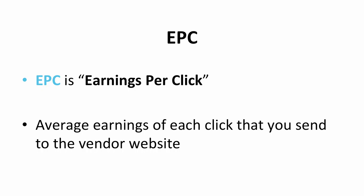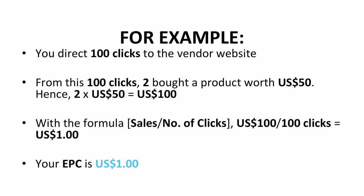In the previous slide, I mentioned EPC. Now I will elaborate and explain about it, and introduce the formula to calculate it. EPC stands for earnings per click — it's the average earnings of each click that you send to the vendor website. It involves your conversion rate. The formula for EPC is sales divided by the number of clicks.